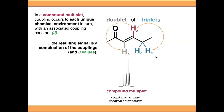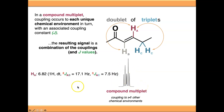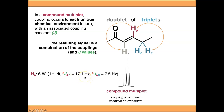Essentially all we do is work out the final signal as a combination of the couplings and their constituent J values. In this case we would end up with a doublet of triplets, and that's what we can see in this signal. This is the nomenclature you typically see in research papers: the 3JAB coupling is a three-bond coupling between A and B, with the magnitude of the J value in Hertz, and the same for AC.